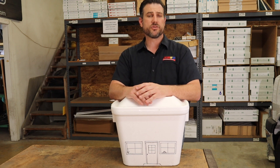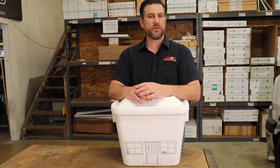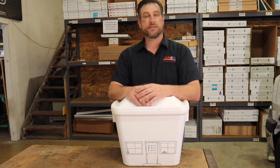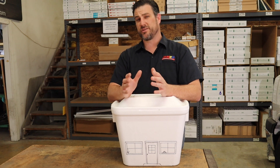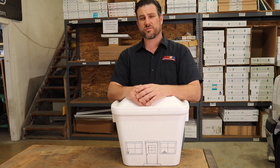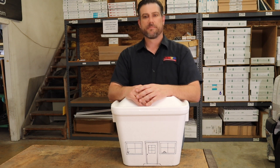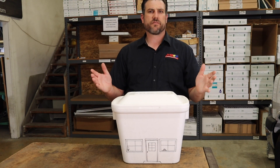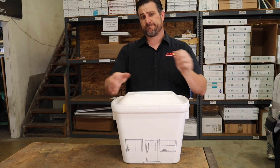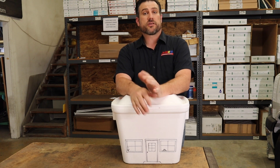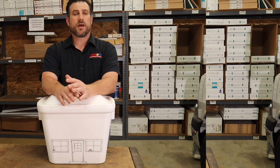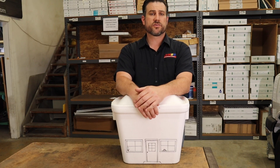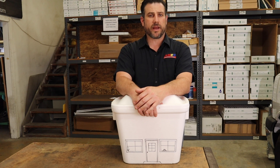Here are some common objections we get from homeowners: Didn't the home builder size the system correctly? The existing system has been here for years and works fine — why change it? Won't a smaller system work harder? I thought it was based off of square footage. All the other contractors said I need a bigger air conditioner. I address these concerns at our website at jmairandheat.com — there'll be a link in the description.